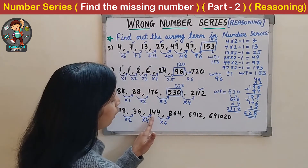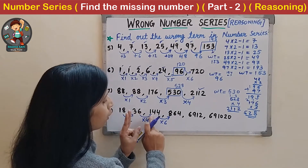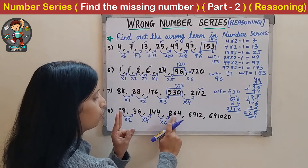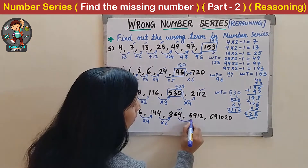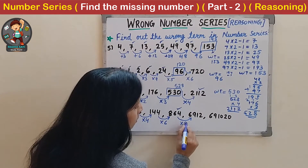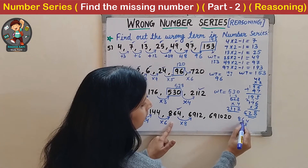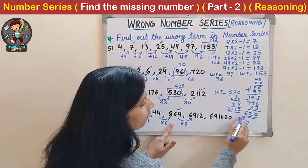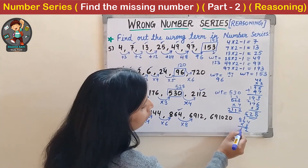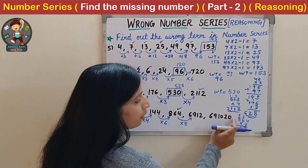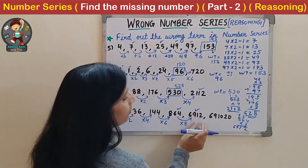If we multiply 144 by 6 we get 864 - exactly the next term. Then as per this rule the next should be multiplication by 8: 864 × 8 = 6,912. This term is also correct. So as per this rule the next number should be multiplied by 10.